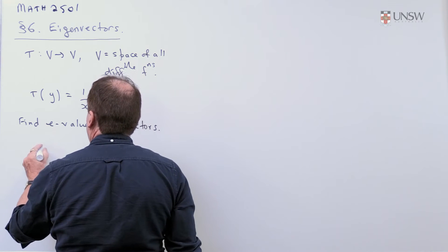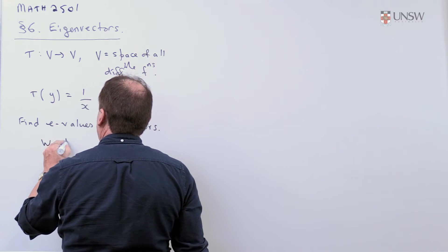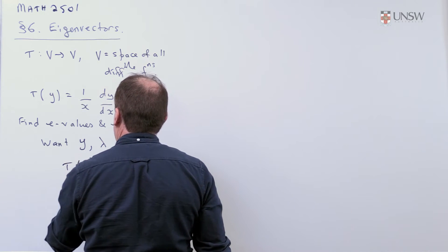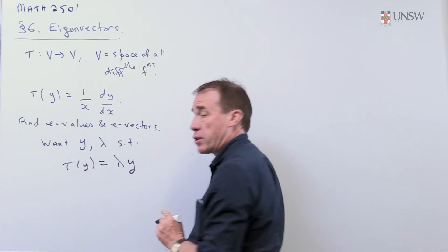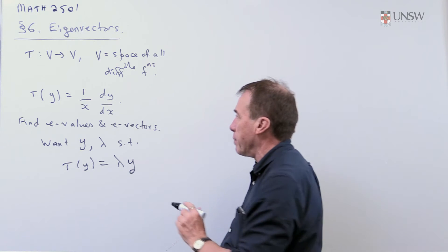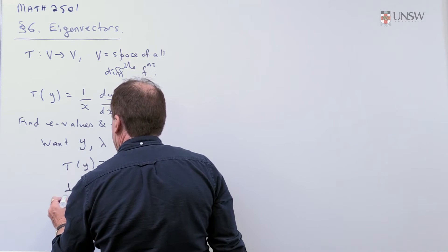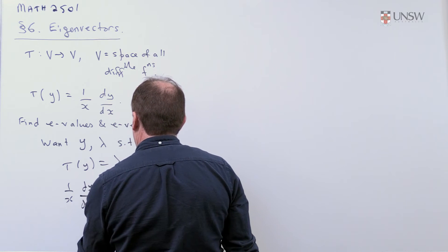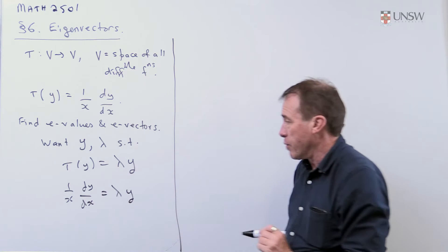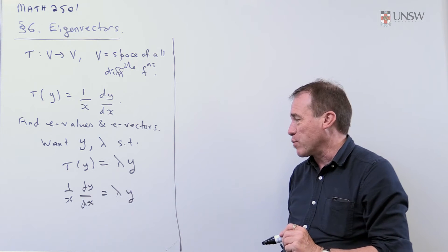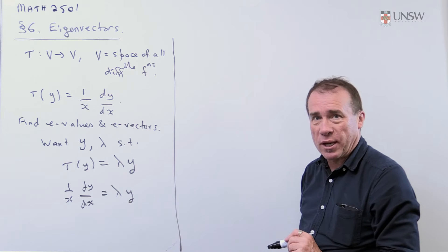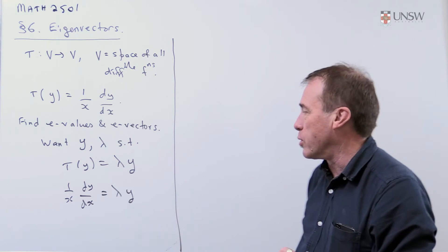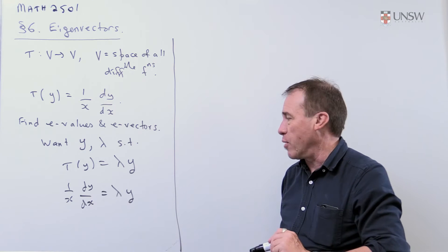What you're looking for is a y and a lambda such that T(y) = λy. That's the definition of an eigenvector. So plugging that in, that says 1/x dy/dx = λy. And now we're back to doing a calculus problem, because this is really just a first-order separable differential equation of the sort that you solved back in Maths 1B in calculus.